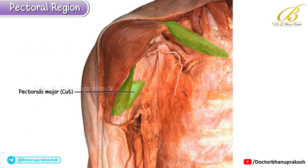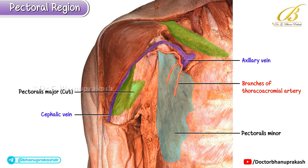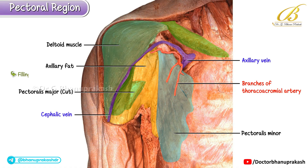In this cadaveric image the pectoralis major has been removed, leaving the pectoralis minor intact with its cut ends clearly visible. We can clearly see the cephalic vein draining into the axillary vein, an important superficial vein in the upper limb. Also visible are the branches of the thoracoacromial artery, which supply the pectoral and deltoid regions, as well as the deltoid muscle itself. The axillary fat is also evident, filling the space around the neurovascular structures.